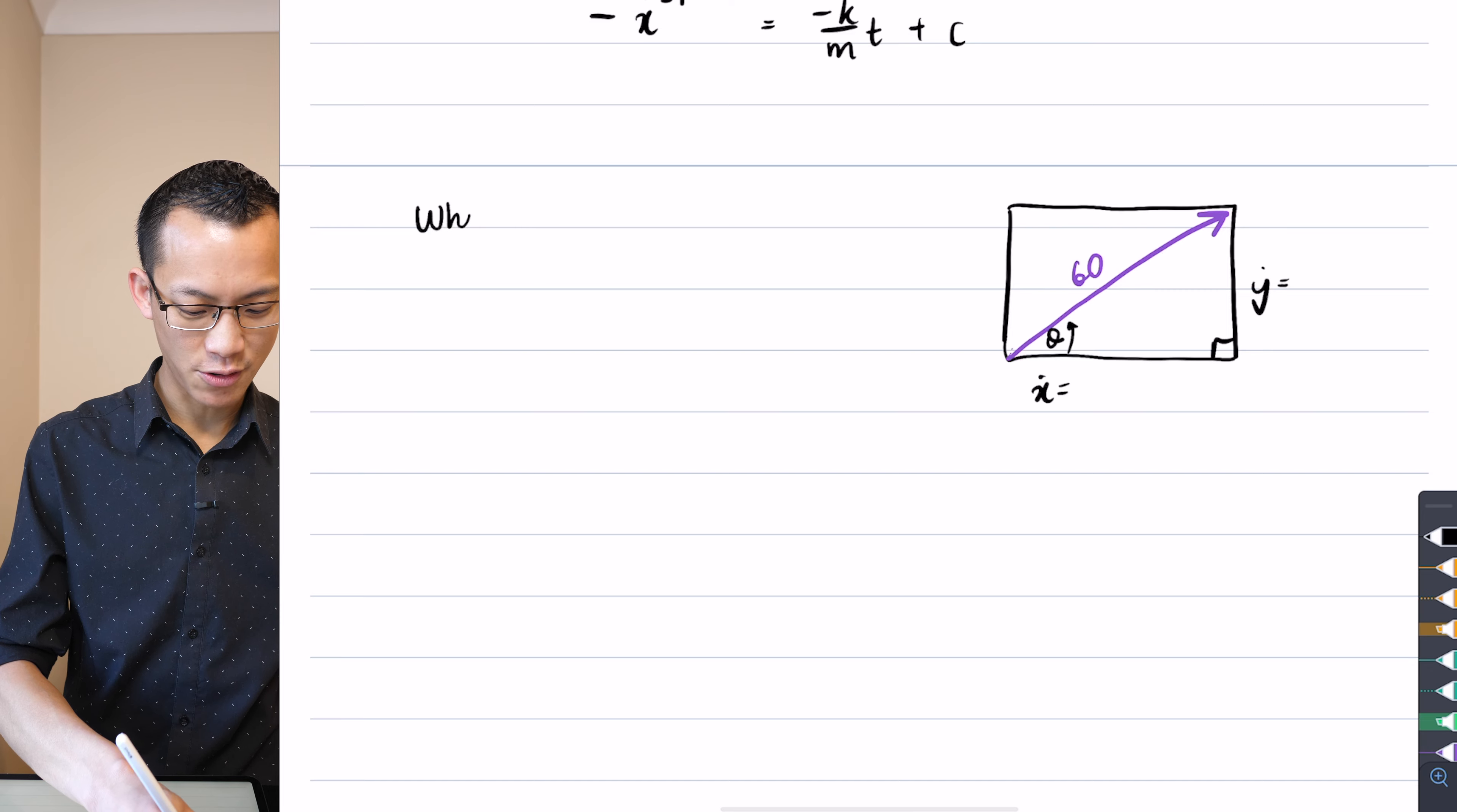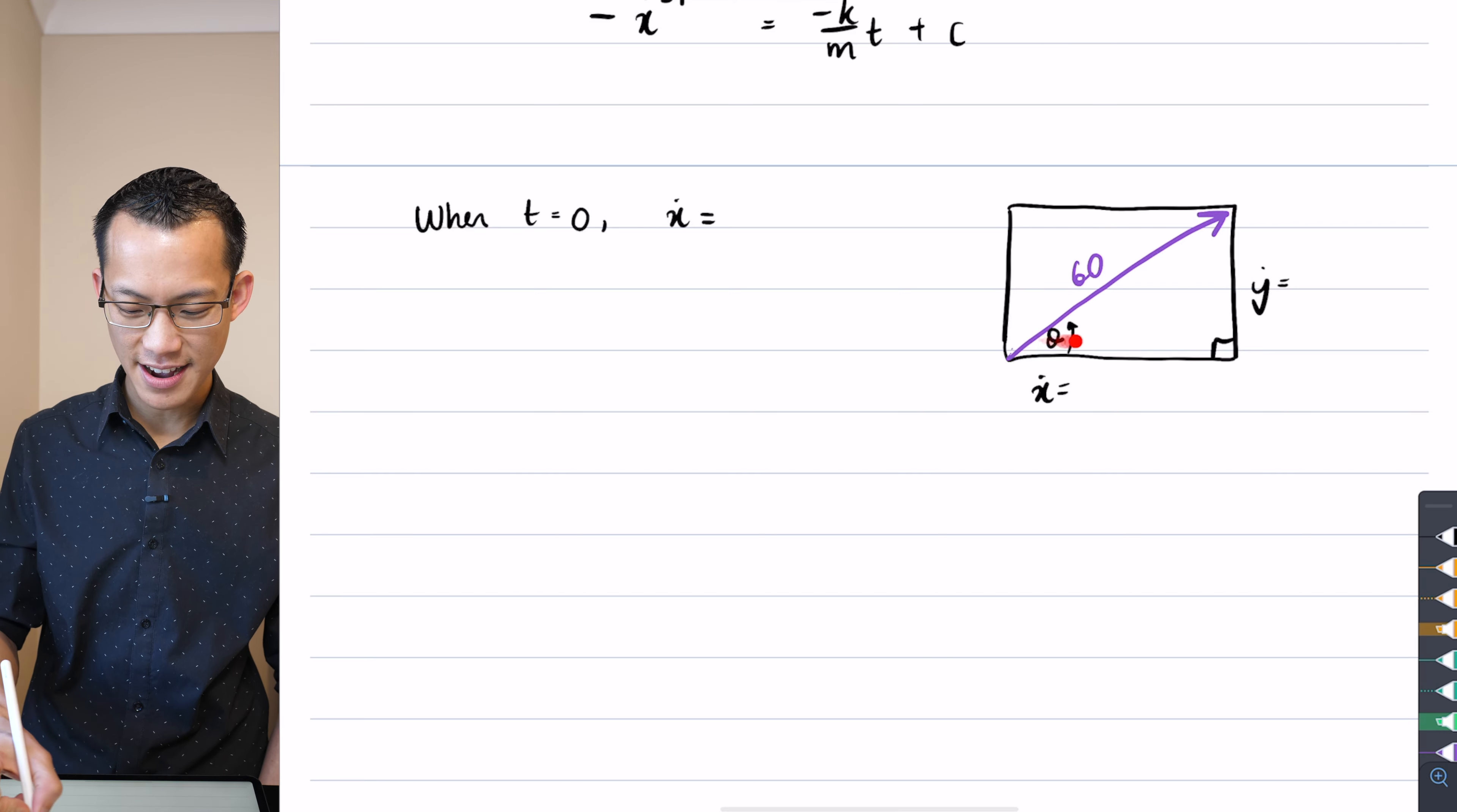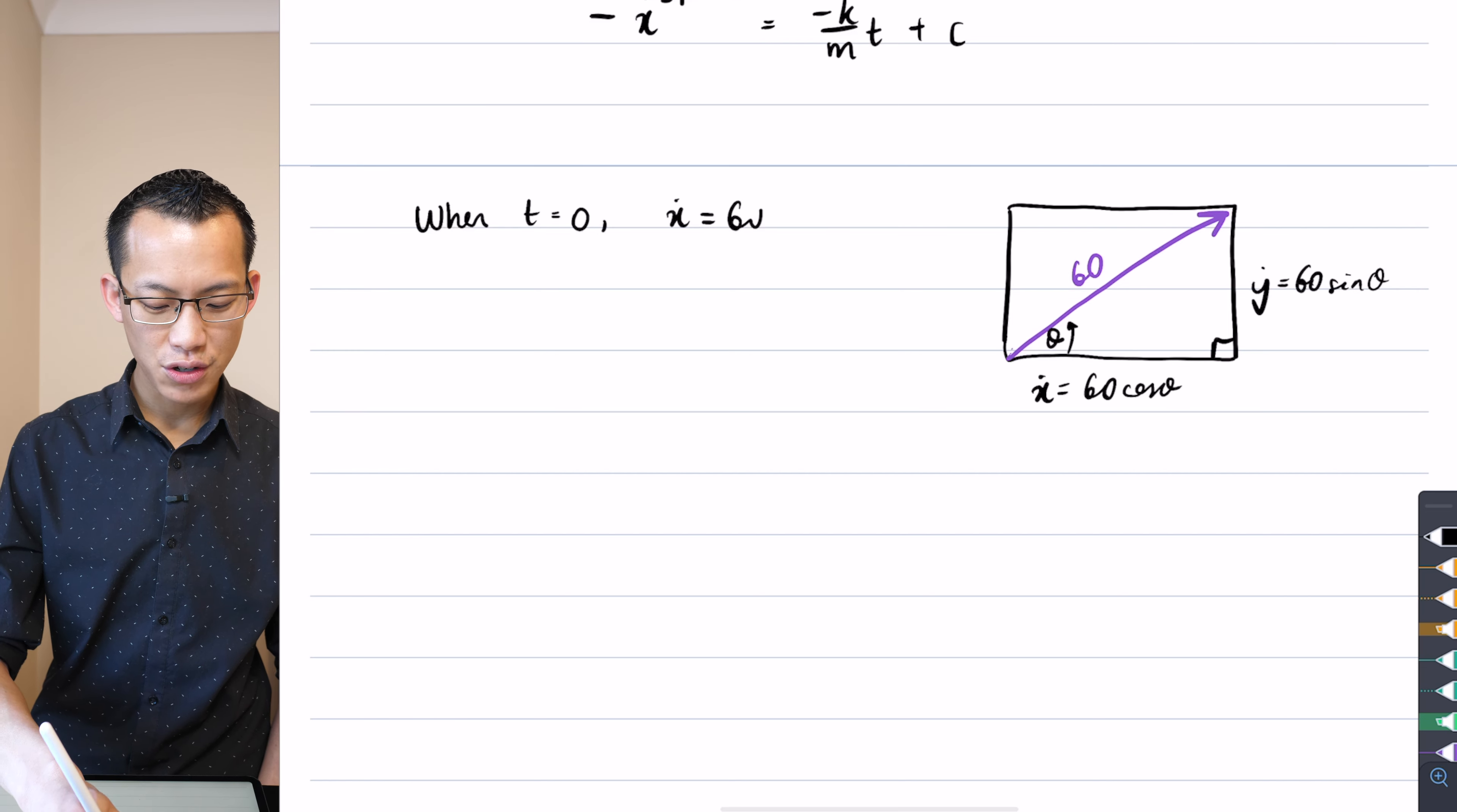When t equals zero - aha, well done, Varen's even been an overachiever and gone to find the greek letters, absolute thumbs up, well done. Yes, it's going to be 60 cos theta because in this triangle here, and also credit to Liam, thank you, cos theta will be x dot on 60, so therefore I just have to multiply through. So that's 60 cos theta here. Obviously if we needed it, y dot would be 60 sine theta, but that's just irrelevant for us.